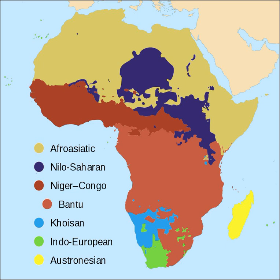However, one of the notable differences between Africa and most other linguistic areas is its relative uniformity. With few exceptions, all of Africa's languages have been gathered into four major phyla. Around a hundred languages are widely used for inter-ethnic communication.